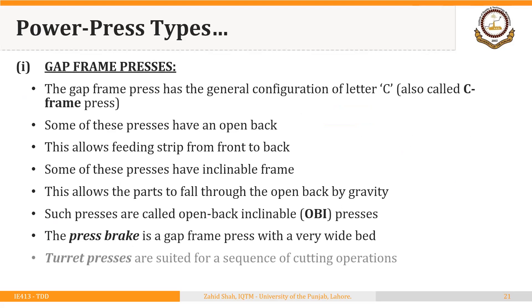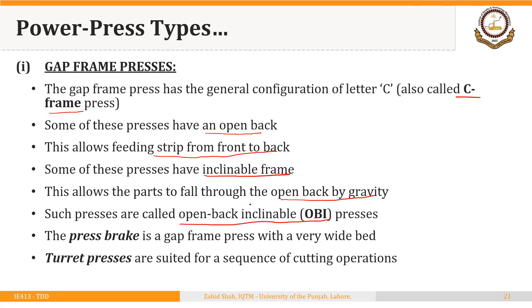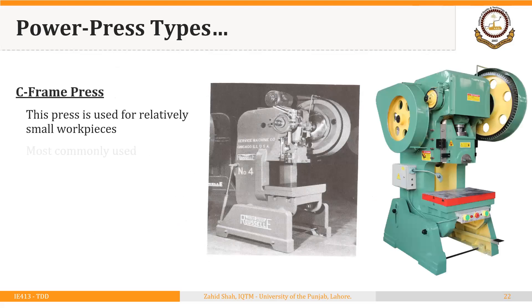Gap frame presses have a general configuration of the letter C, so they are also called C-frame presses. Some have an open back, allowing feeding of strip from front to back in addition to right to left. Some presses have inclinable frames that can be tilted from front to back, allowing parts to fall through the open back by gravity — these are called open back inclinable or OBI presses. Another type is the press brake, which has a very wide bed and is more common for bending operations. Turret presses are suited for sequences of cutting operations.